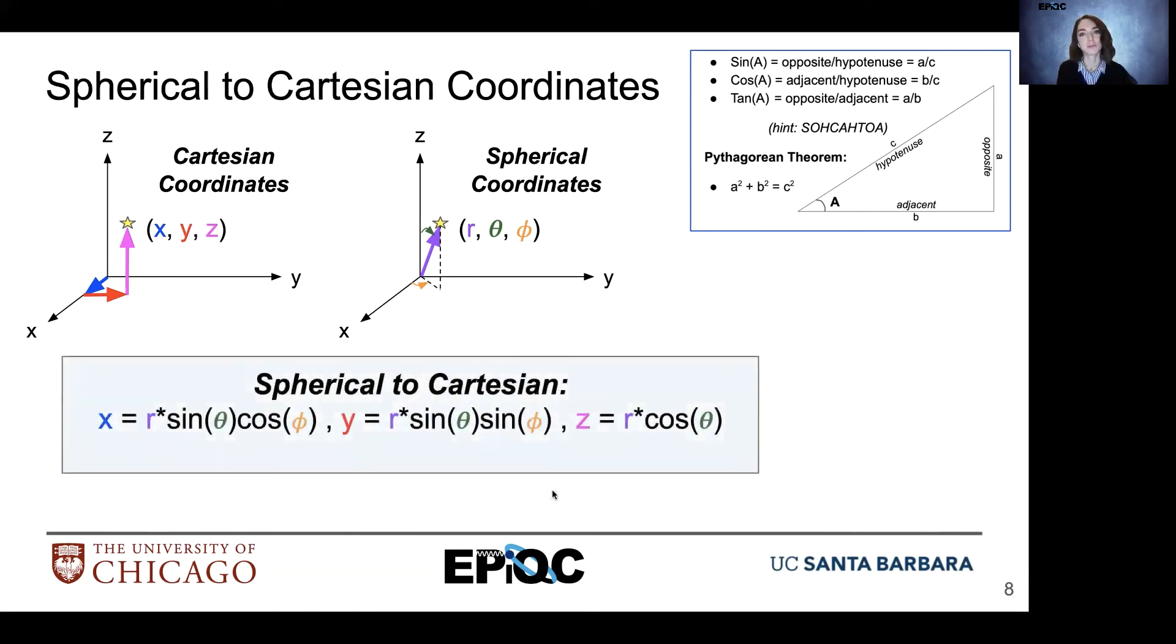If we're going from spherical to Cartesian coordinates, we have the same type of application of those identities. So here we have our equations for x, y, and z. And we can see that we're trying to use the combination of functions, so our sine, cosine functions, that allow us to cancel out every other value except for our one of interest. So either x, y, or z.